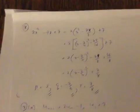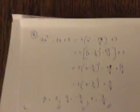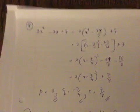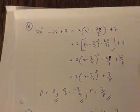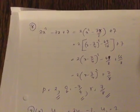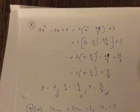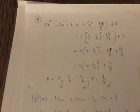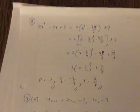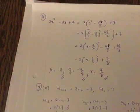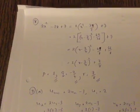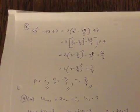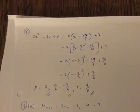Question 8: completing the square (not an equation, so can't divide through). Factorize by 2: 2(x² - 7x/2) + 7, then complete the square to get 2(x - 7/4)² - 49/16 + 7, which is 2(x - 7/4)² - 49/8 + 56/8 = 2(x - 7/4)² + 7/8. So p = 2, q = -7/4, r = 7/8.